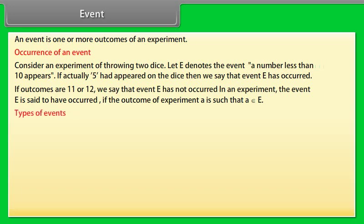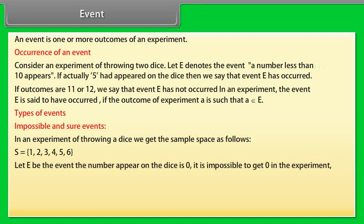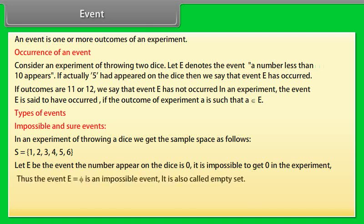Types of events — impossible and sure events. In an experiment of throwing a dice, we get the sample space S = {1, 2, 3, 4, 5, 6}. Let E be the event 'the number appearing on the dice is 0.' It is impossible to get 0 in the experiment. Thus, the event E = Φ is an impossible event. It is also called the empty set.